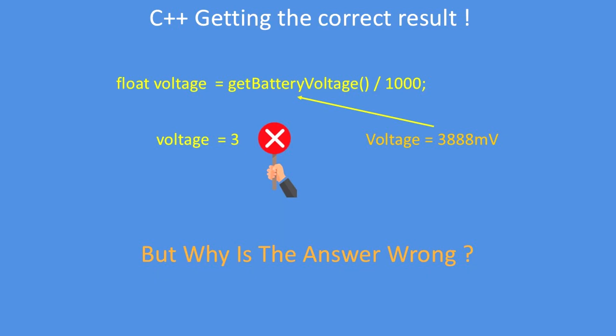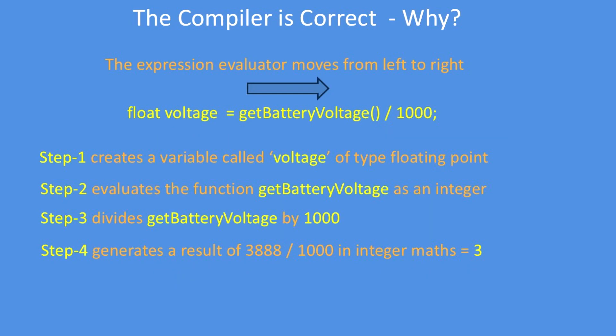So why is that? Well, the compiler is correct. Let's walk ourselves across the program line as the compiler expression evaluator does. The first thing it does is step one: create a variable called voltage and it's defined float, so it's of type floating point. Step two is to evaluate the function getBatteryVoltage.